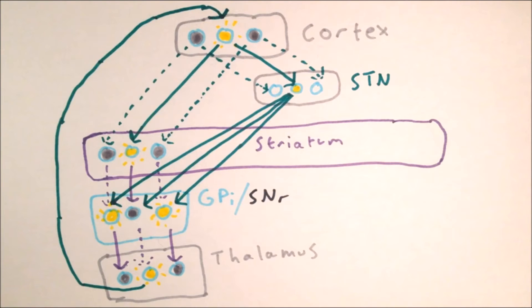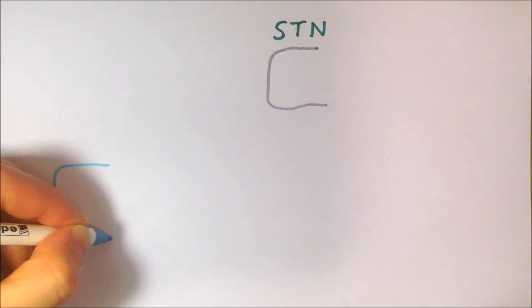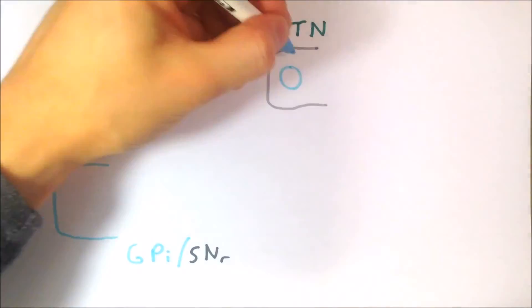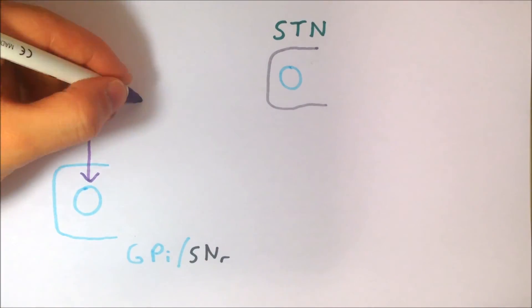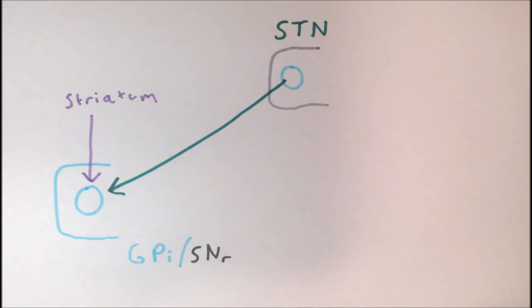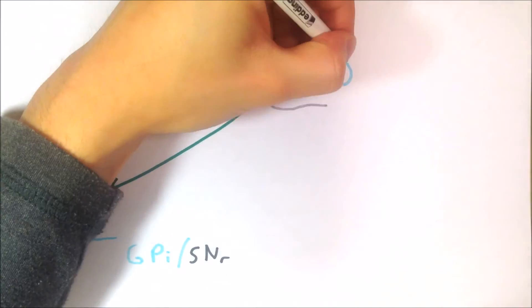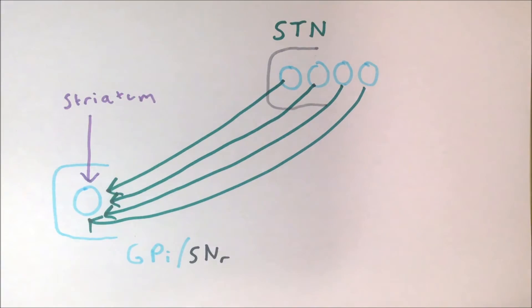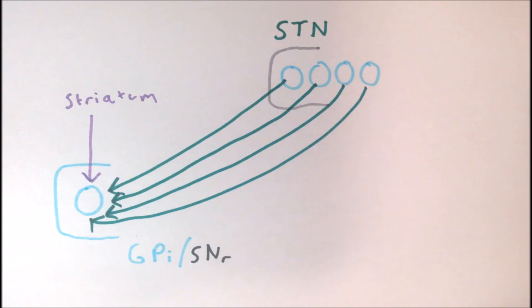As we can see, the selection pathway seems to work fine. Then what's the purpose of the control pathway? Let's focus on the subthalamic nucleus and globus pallidus interna of one loop whose activation is suitable for the current situation. Now, as we add more and more loops in our model, there is still only one inhibitory input.